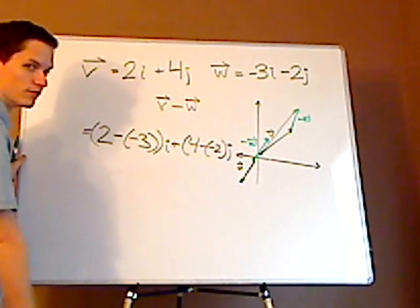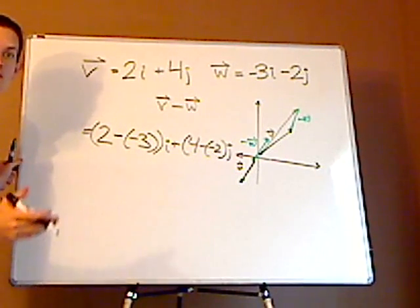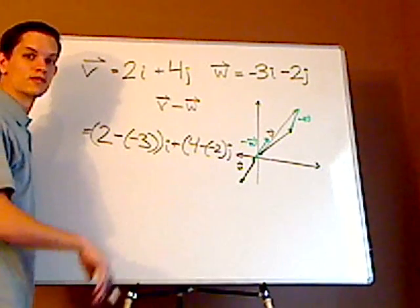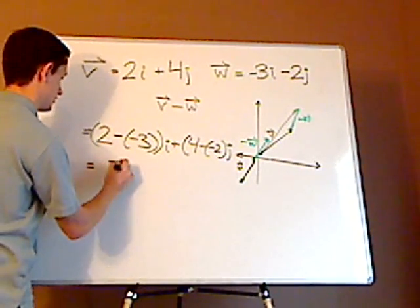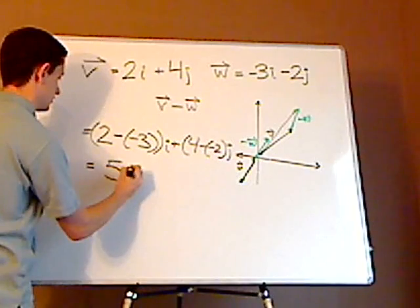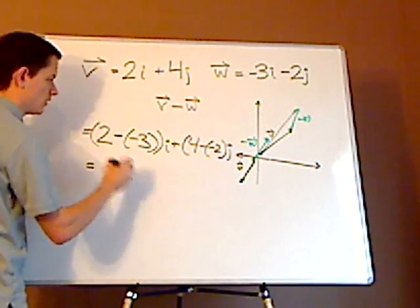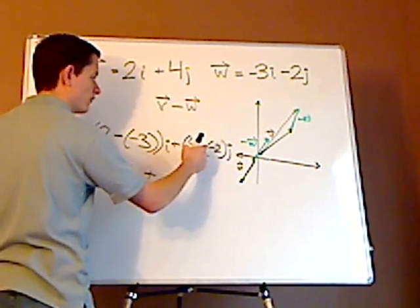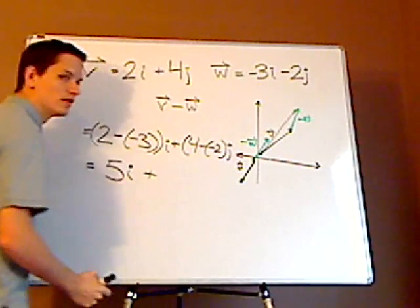2 minus a negative 3 is actually 2 plus 3. What's 2 plus 3? 5i plus what's 4 minus a negative 2?